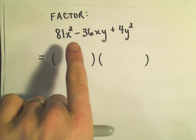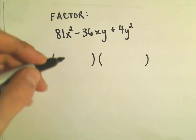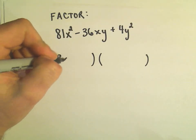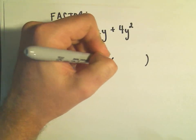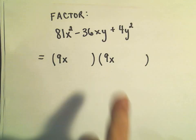To get the 81x², I could use 9x and 9x. There are certainly other numbers that multiply to give us 81, but this is often my first guess.